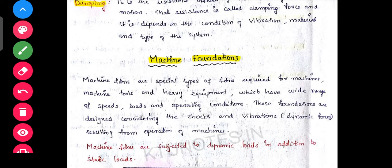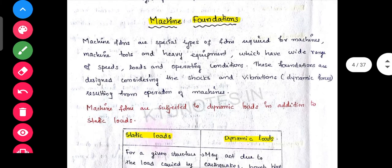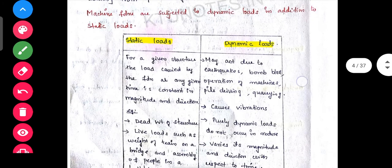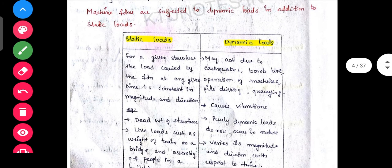Machine foundations are a special type of foundation required for machines, machine tools, and heavy equipment which have a wide range of speeds, loads, and operating conditions. These foundations are designed considering the shocks and vibrations resulting from operating machines.